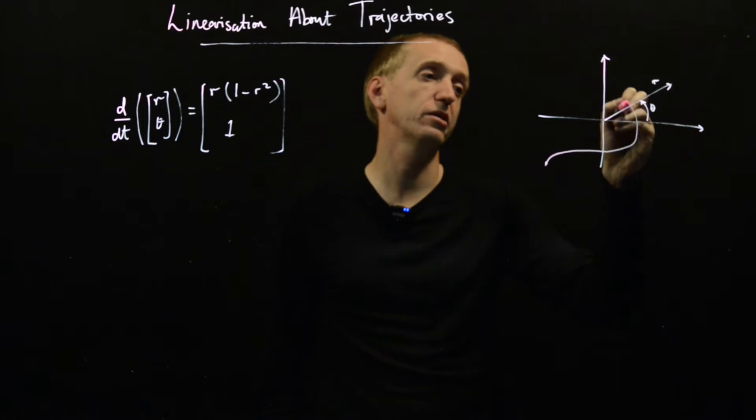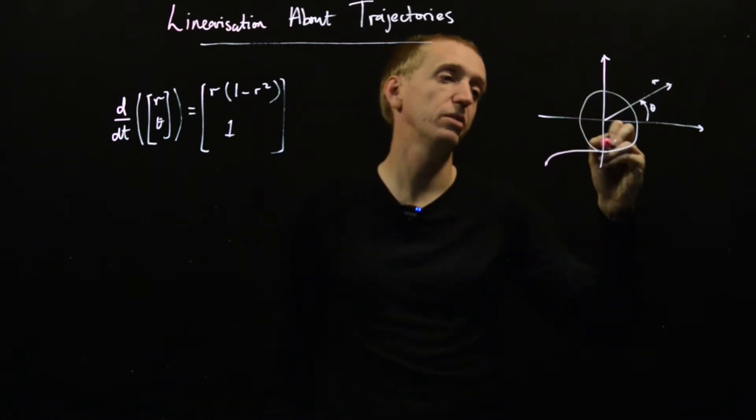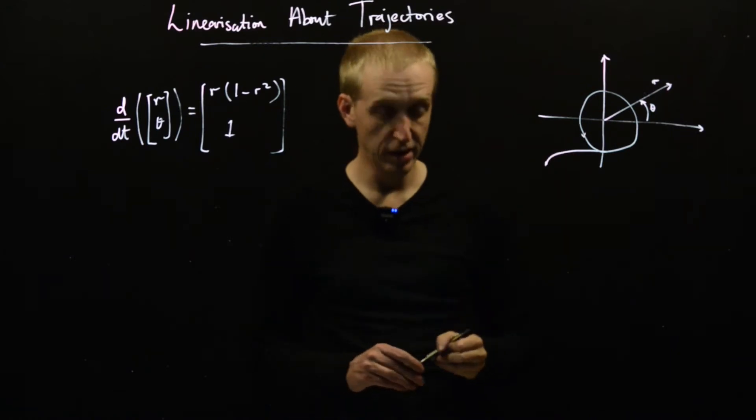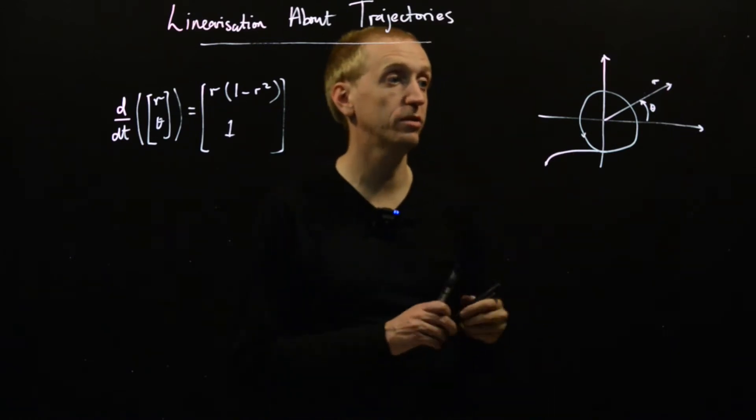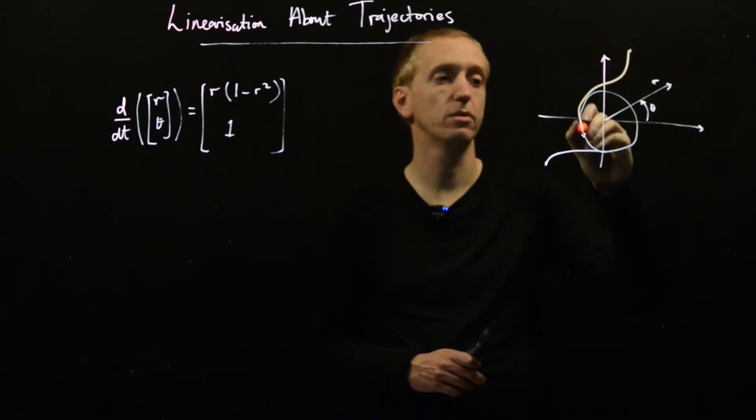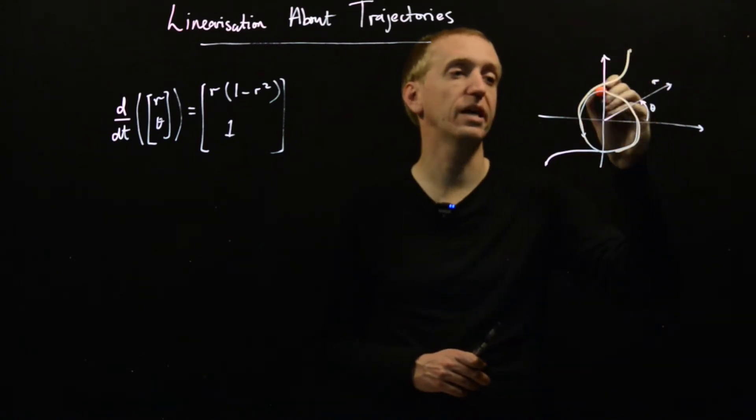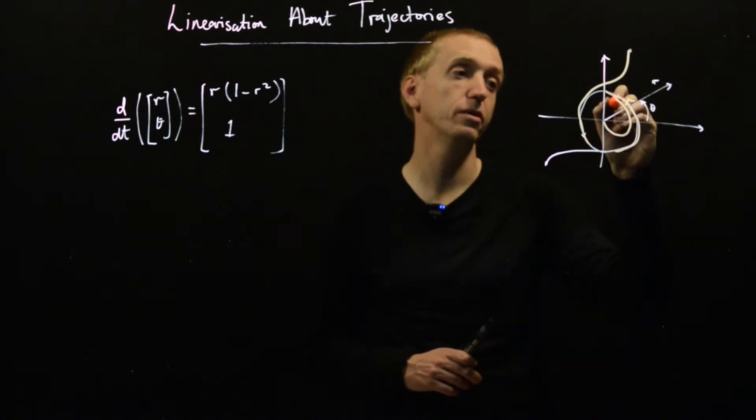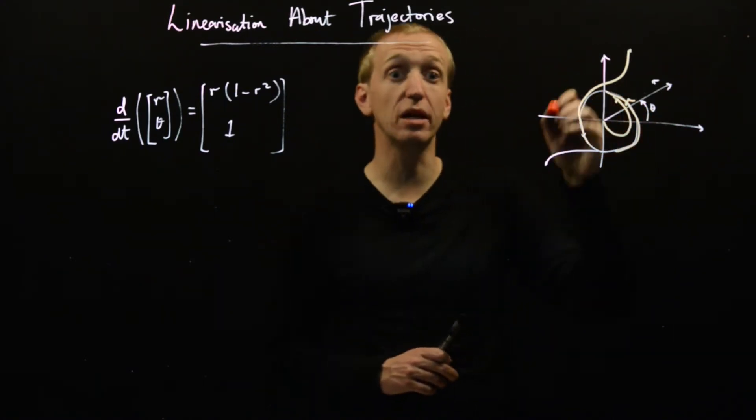We follow a trajectory that looks something like this, and then it spins round and round. Then we try some other initial conditions, start up here, and we fall into exactly the same periodic orbit. If we start here, we also join this, and so this is a limit cycle.